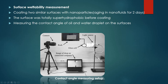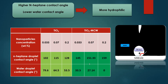This picture shows our contact angle measuring setup. Nanofluid nanoparticles were prepared in three different concentrations for both types of nanoparticles. Two different types of contact angles were measured: by injection of a normal heptane droplet in a water environment, and a water droplet injected in a normal heptane environment.